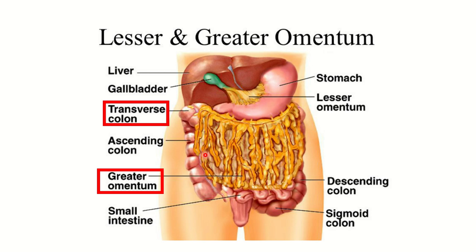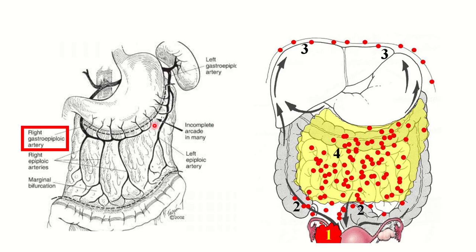The greater omentum attaches to the greater curvature of the stomach, then attaches to the transverse colon, and is free into the peritoneal cavity. In this first picture we can see the greater omentum attaching from the stomach to the transverse colon, and we can also see the arteries located within it.